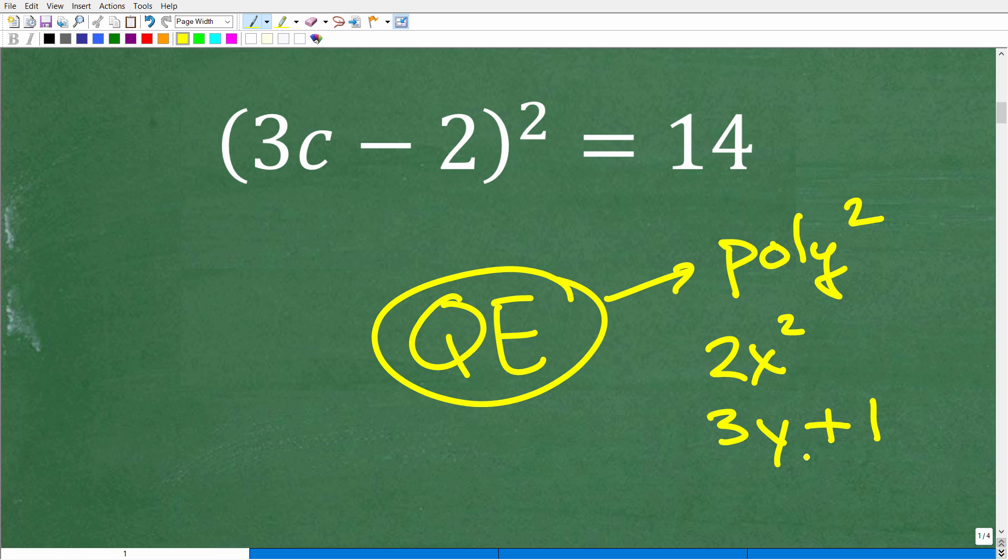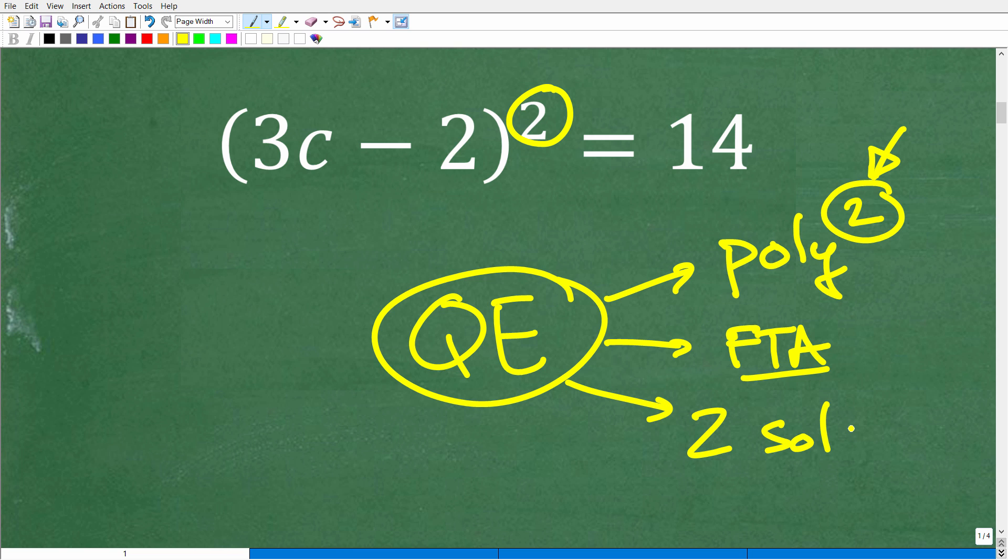As you continue to study mathematics, there's the Fundamental Theorem of Algebra, which tells us how many solutions polynomial equations have. A polynomial equation will have the number of solutions equal to its highest power. So all quadratic equations will always have two solutions - real or imaginary.